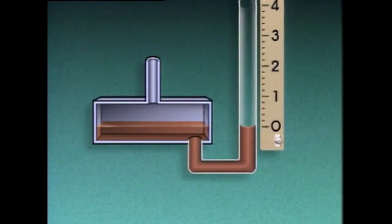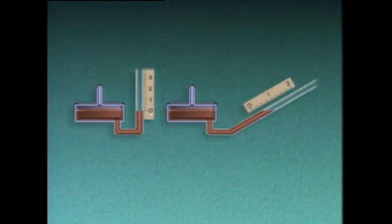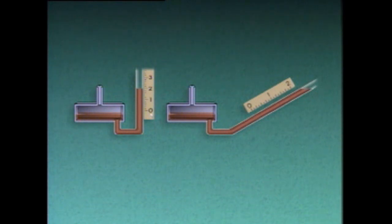Two other types of manometers used in industry are the well manometer and the inclined manometer. Both work on the same basic principle as a U-tube manometer, but they're read differently. Rather than adding the levels in two legs, both a well manometer and an inclined manometer are read directly from the top of a single column of liquid. With any type of manometer, the level of the liquid indicates the pressure. Different liquids can be used in manometers, and some liquids are read differently than others, so you have to know how to read the liquid level correctly.